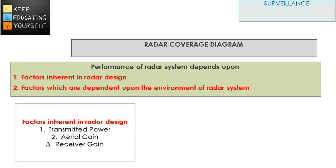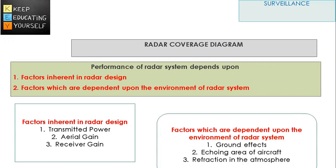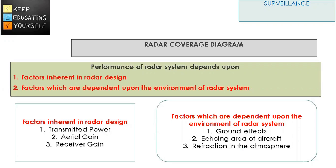Factors inherent in radar design include transmitted power, aerial power, and receiver power. Factors which are dependent upon the environment of the radar system include ground effects, echoing area of aircraft, and refraction in the atmosphere.